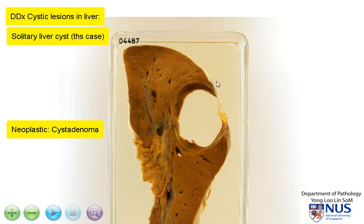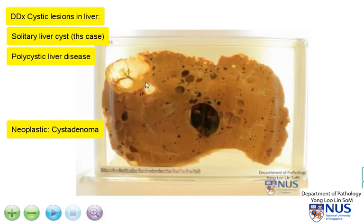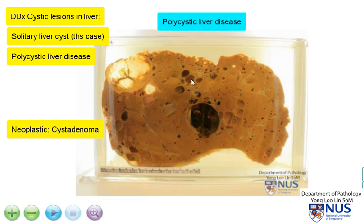Another differential diagnosis is a non-neoplastic one, which is polycystic liver disease. In that instance, you would see multiple cysts. Here is an example of polycystic liver disease — the cysts can be very variable in terms of number. They could be numerous, affecting almost the entire liver parenchyma, or they can be fewer, as in this instance where we can still see some normal hepatic parenchyma in between.